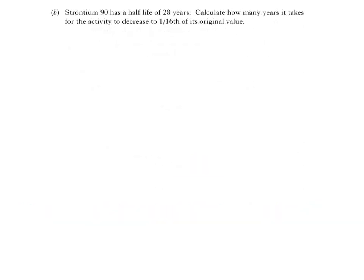Part B says, Strontium-90 has a half-life of 28 years. Calculate how many years it takes for the activity to decrease to 1/16th of its original value. Of course, half-life is the time taken for the activity of a radioactive source to decay by half. Now, we don't know the initial activity of the source, so I'll just write the number 1, to represent 1 times its initial activity.